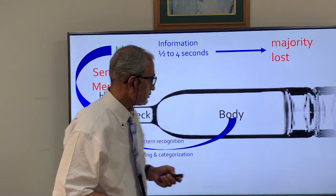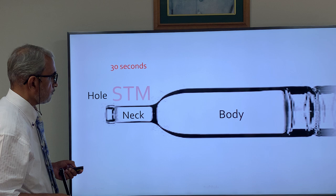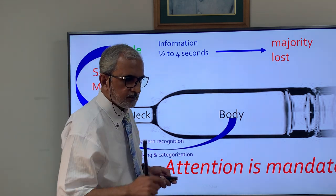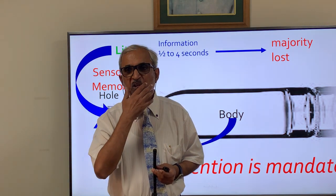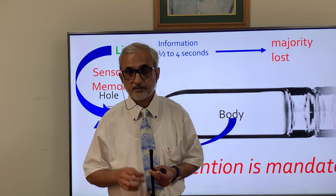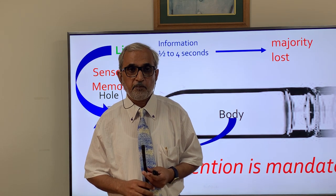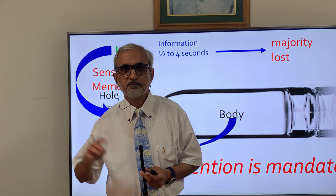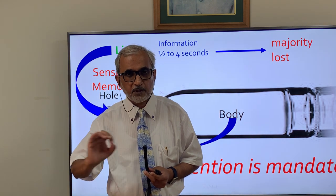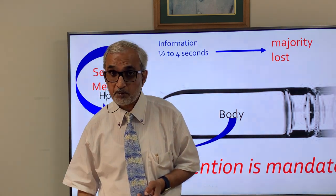To give an example of chunking: have you noticed that debit or credit cards have 12 digits divided into sets of four? It is difficult to remember 12 digits at once given that sensory memory lasts only half to four seconds. But divided into groups of four, you read the first four, write them, then move to the next four. If you had to read all 12 and then write them, it would not be possible.